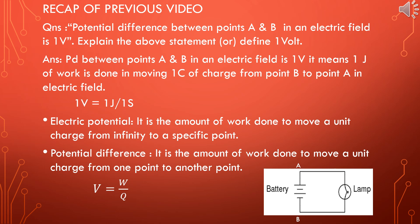The same question can be asked as: define 1 volt. But the answer remains the same. That is, the potential difference between points A and B in an electric field is 1 volt. It means 1 joule of work is done in moving 1 coulomb of charge from point B to point A in an electric field, as shown in the diagram below — that is, from point B to point A.